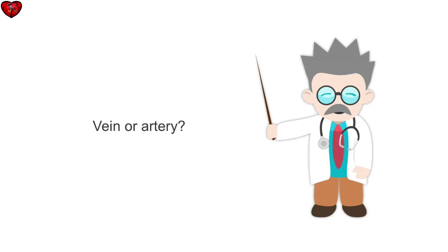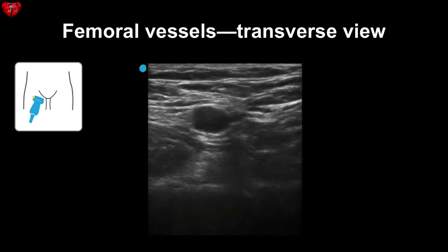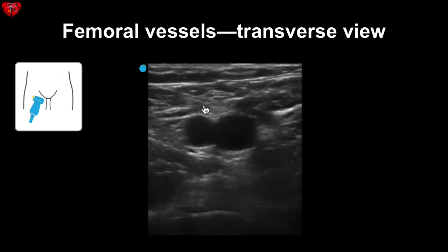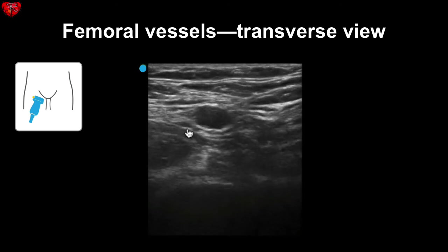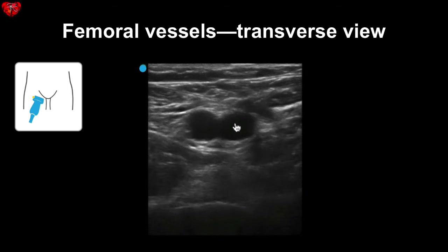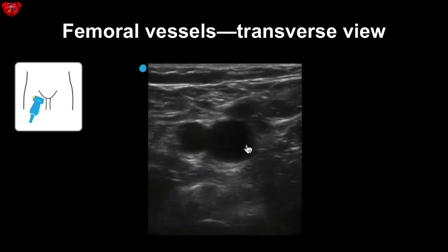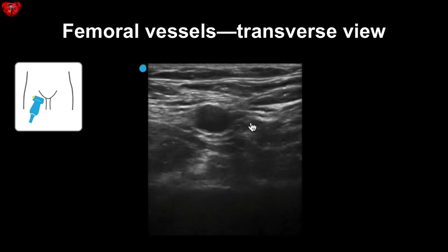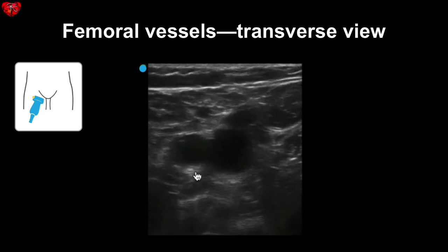The artery and vein travel closely together. Sometimes the vein is lateral to the artery, so you may need to compress the vessels or use Doppler to tell them apart. Here you can see the femoral vessels in transverse or short axis view — the artery is more lateral and more round, while the vein is more medial and more oval. Here you can see the operator clearly compressing the vein while the artery maintains its shape.